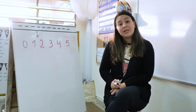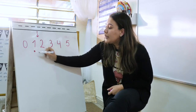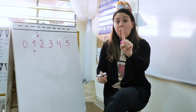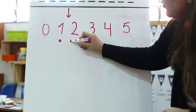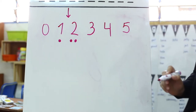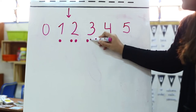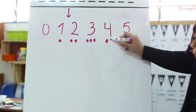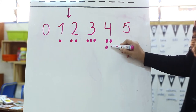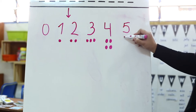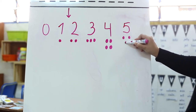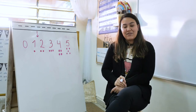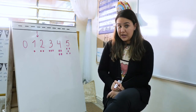Each number represents something. If I say one, it means I'm talking about one object, one person, or one animal — always about one. When I say two: one and two. When I say three: one, two, and three. When I say four: one, two, three, and four. And then we get to number five: one, two, three — like a face, right — four, and five.